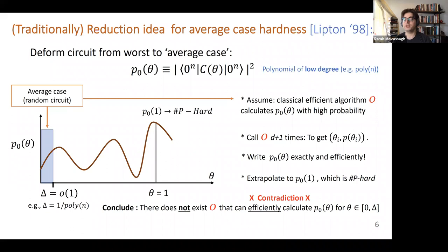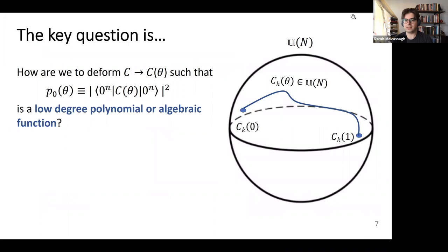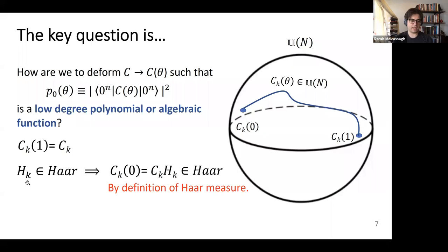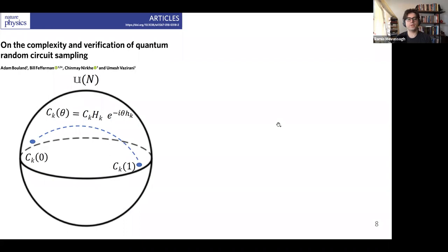The idea is you grab every one of the gates—N here is two or four (one-qubit or two-qubit gate)—and deform it such that at theta equals one it's the known #P-hard instance and at theta equals zero it's from the Haar measure. If Hₖ is the corresponding Haar gate, then anything times a Haar gate is Haar by translation invariance of the Haar measure. So at theta equals zero we have something that is Haar because it's random.